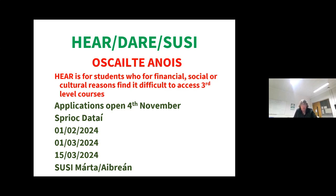Going on to HERE, DARE, and SUSI — there are very important dates coming up fast. HERE is for students who, for financial, social, or cultural reasons, can apply to the HERE application. On their CAO form on the 1st of February, they must tick a box to say they wish to be considered as a HERE applicant. They look at the income coming into the home, how many brothers or sisters have or have not gone to college before your son or daughter, and the area in which you're living — if it's a disadvantaged area, or if your son or daughter may be the first person in your household to go on to third level. On the 1st of February, they just tick a box to say they wish to be considered for HERE.